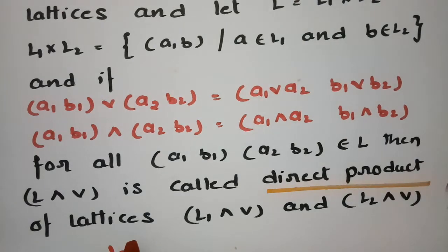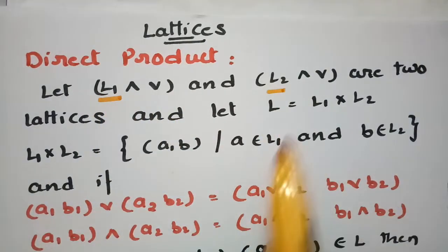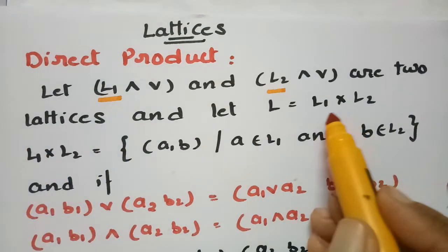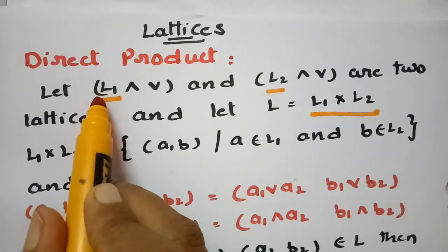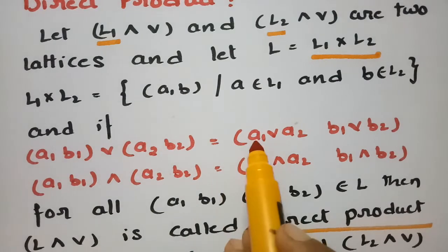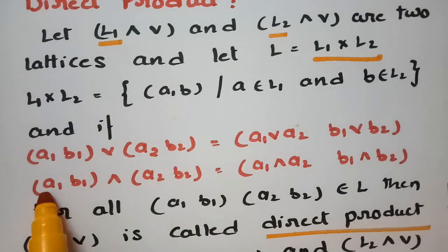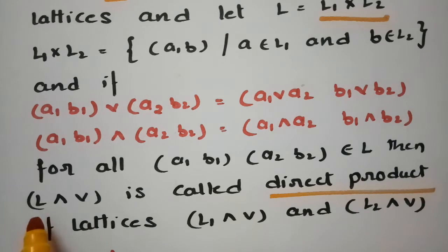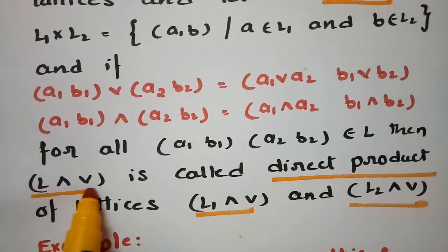It is the direct product of the lattices L1 and L2. So there are two lattices: L1 and L2. These are finite sets and meet and join are the operations on them. The direct product L1 × L2 is the set of pairs (A, B) where the first element belongs to L1 and the second to L2. If the join and meet conditions hold for all elements in L, then L is said to be the direct product, represented as L with meet and join.